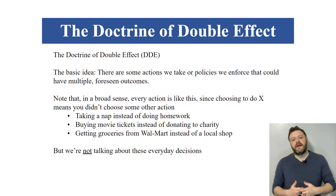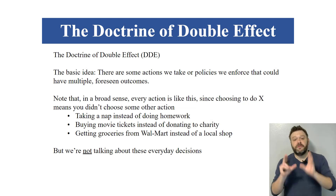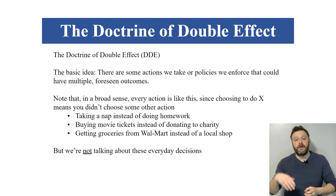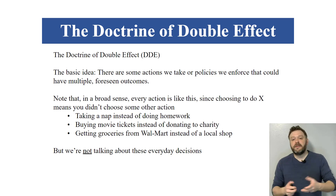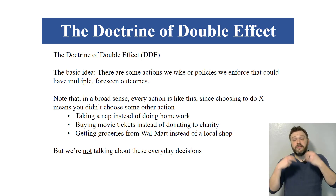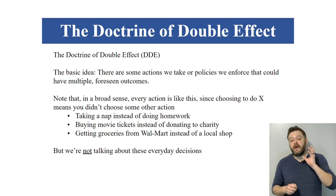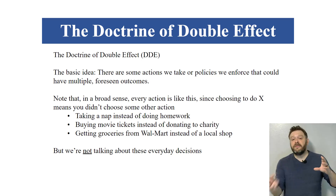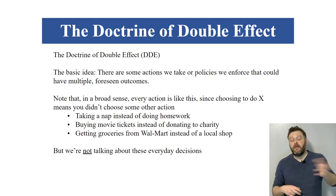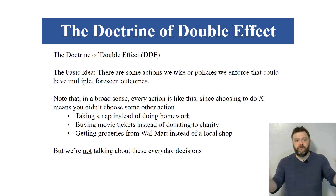I think the best way to understand the doctrine of double effect is as a decision procedure. Remember how an ethical theory has three parts: criterion of right, decision procedure, theory of value. The doctrine of double effect is just this principle that functions as a decision procedure — a way to decide whether or not the thing that you're about to do is morally permissible or not. What's kind of cool about the doctrine is that any ethical theory could incorporate this as part of its broader decision procedure — a consequentialist, deontologist, or even a virtue ethicist possibly could incorporate it into his or her fully fledged ethical theory.